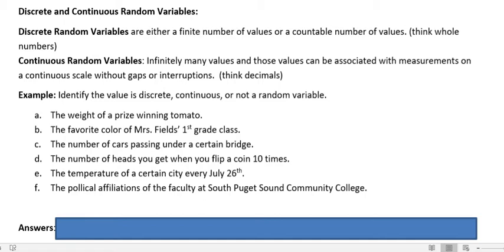The temperature of a certain city every July 26th. Temperature is a measurable, continuous scale, just like weight is. So temperature would be a continuous random variable.